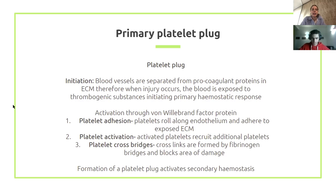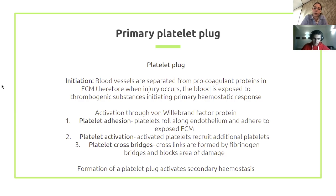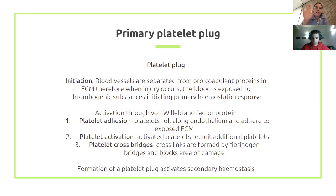The second stage is the primary platelet plug. When the extracellular matrix is exposed by injury, it releases thrombogenic signals. Platelet adhesion occurs — platelets roll along and adhere to the exposed matrix, activate other platelets, and draw more in. Fibrinogen cross-links the platelets to block the area of damage. This primary platelet plug is like a temporary band-aid, and it then initiates the next stage.